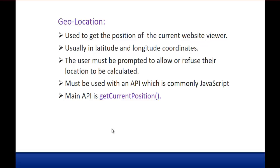This is the new feature: geolocation. If you want to get the browser's or the user's current location, you can make use of the geolocation API present in HTML5. If you need to get the position of the current website viewer, use this geolocation feature. It returns values of longitude and latitude, giving the current position of the user. The main API we use to get the current position is getCurrentPosition, which returns the current position of the web viewer.